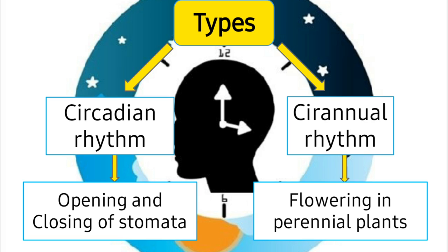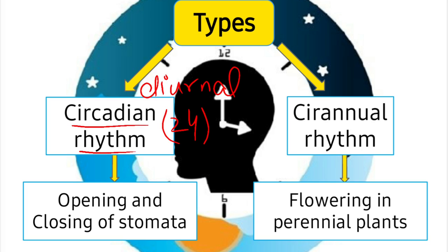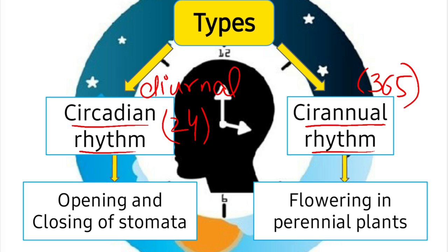The first type is circadian rhythms, which are also called diurnal rhythms. These are the rhythms that repeat within 24 hours — activities we see happening within the duration of one day. On the other hand, annual rhythms are those activities which occur over the span of a year, i.e., at yearly intervals of 365 days. So we can say that activities repeated on a daily basis are diurnal rhythms, and activities repeated on an annual basis are called annual rhythms.